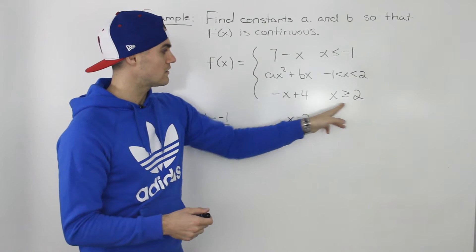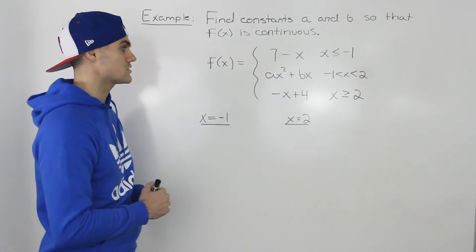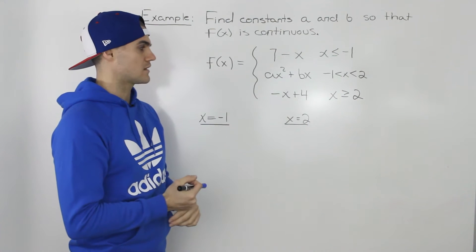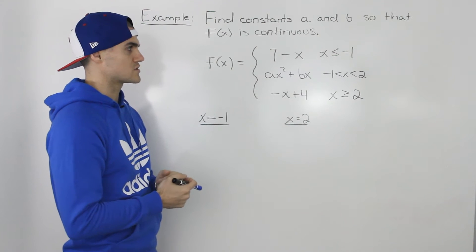And for x values greater than 2, negative x plus 4 is another line, and that's going to be continuous too. So really, all we have to concern ourselves with is those meeting points of negative 1 and positive 2.